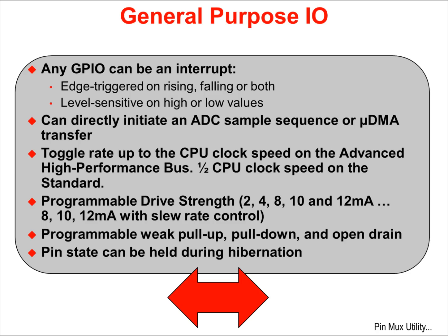The toggle rate can be as high as the CPU clock speed on the advanced high-performance bus. As outputs, the drive strength is programmable to be 2, 4, 8, 10, and 12 mA.